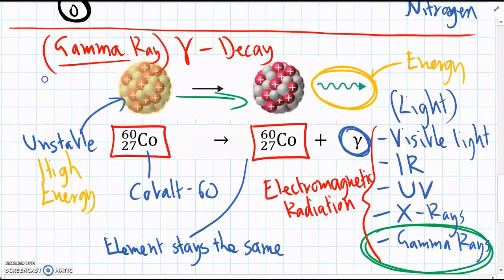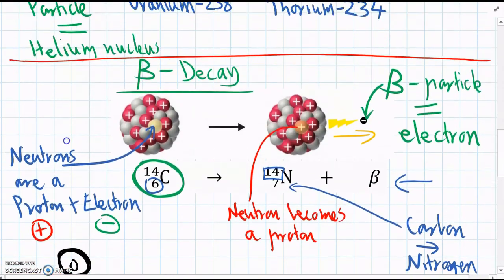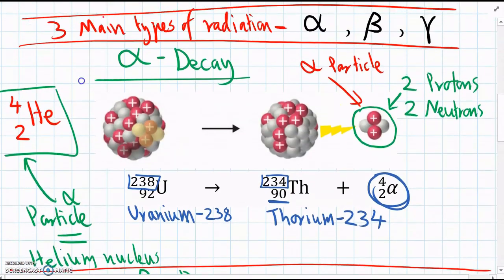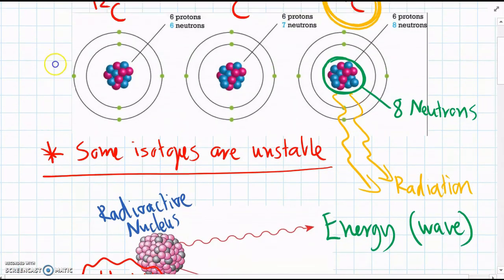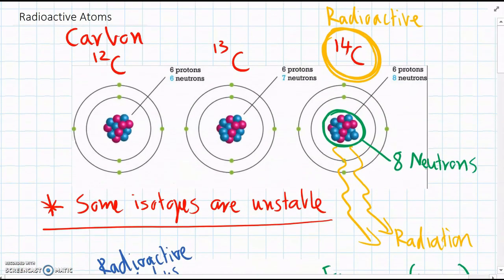So that's the three main types of radiation that atoms can undergo. So there are other types, but we'll stick with these three for now.